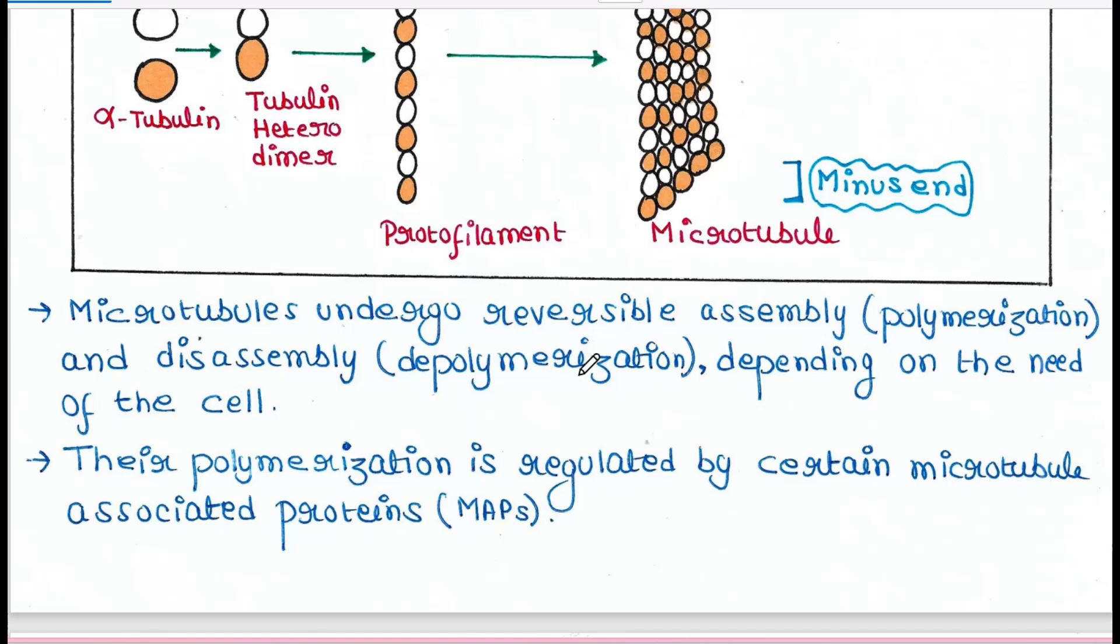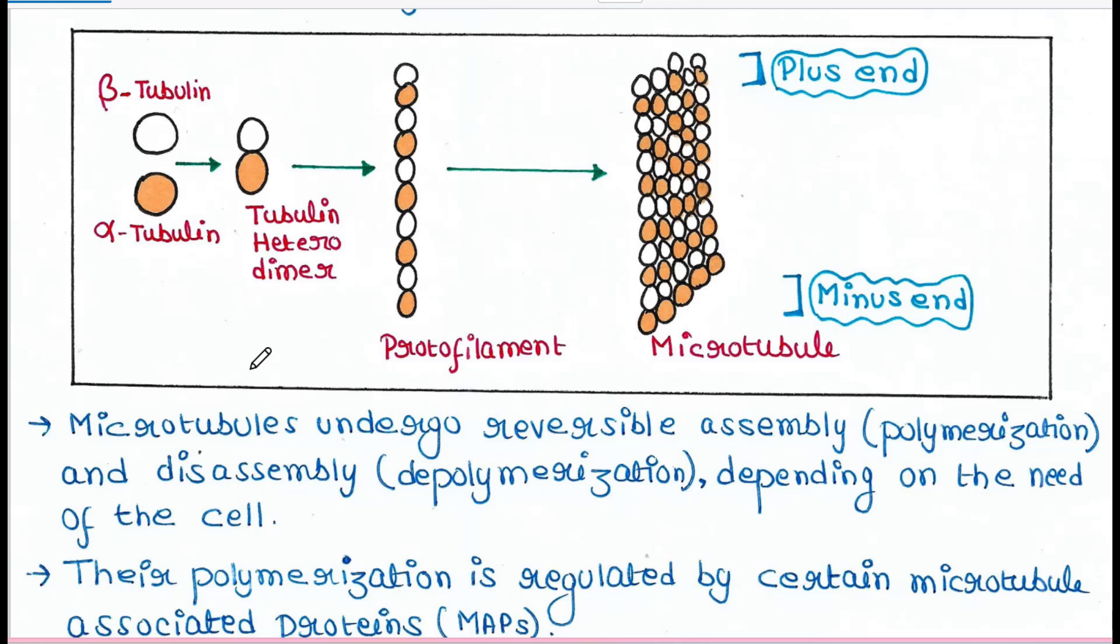Now, microtubules undergo assembly or polymerization and disassembly or depolymerization depending on the need of the cell. And this is a reversible event. That means they can be assembled or they can be disassembled. Both will happen depending on the need of the cell.